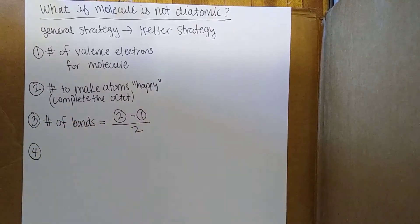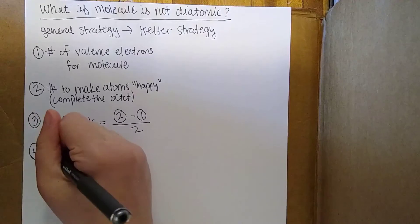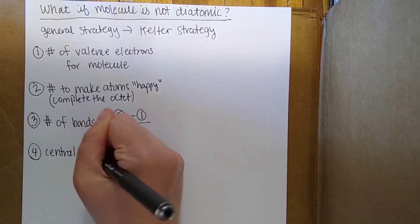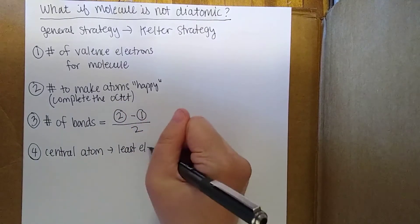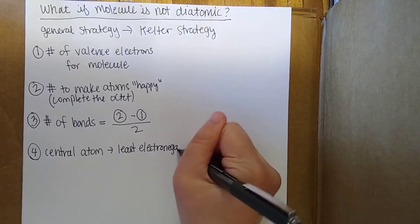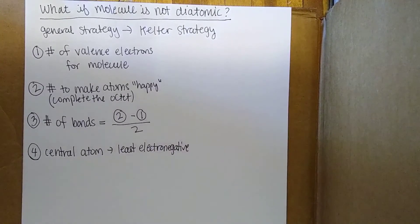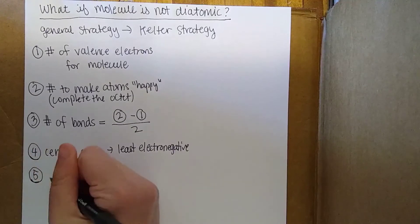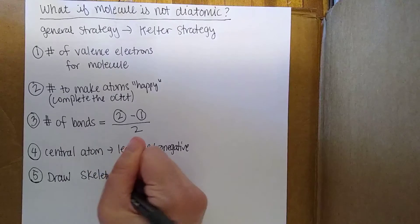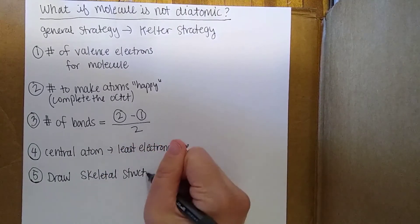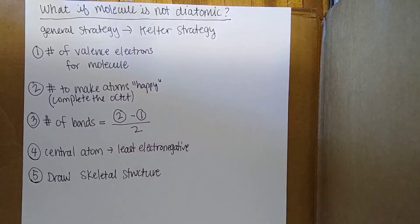But the next thing we have to do is figure out what's the central atom. The central atom is the least electronegative atom. So that's going to be the one that becomes the center. All the other atoms are going to be placed around it. The next thing we have to do is draw the skeletal structure.